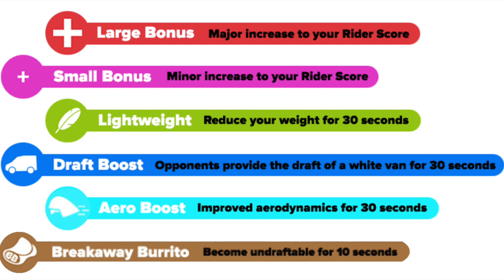Then there's a lighter teal color circle with an aero helmet — that's the aero boost, giving you improved aerodynamics for 30 seconds. I'm not quite sure what the math is on the difference between the draft boost and the aero boost in terms of actual wattage assistance. The last one is no longer active in Zwift — it was a brown circle with the icon of a burrito. That one made you undraftable for 10 seconds, so the theory was you could bridge up to a group without carrying everybody with you. It expired before my time, but when I read about it I thought it was a really cool, clever concept. It's gone now.